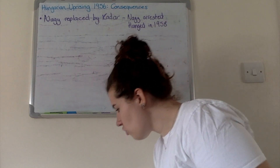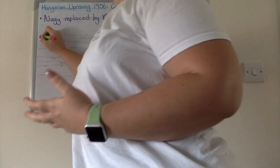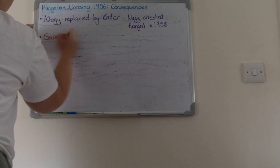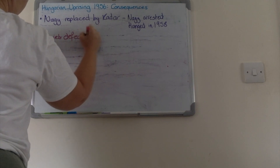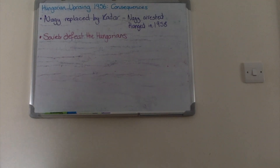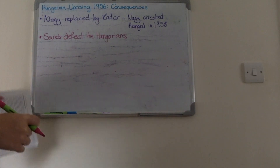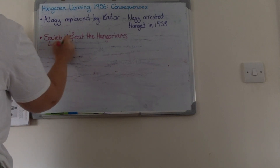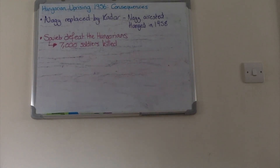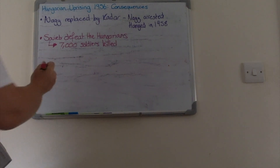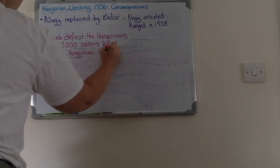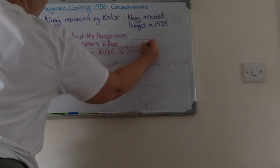So what were the consequences? The Soviet troops were very easily able to defeat the Hungarians, and it is done with very little loss of life for them — only roughly about 7,000 Soviets killed. In terms of the rebels, it's much, much more: 20,000 Hungarian rebels are killed.